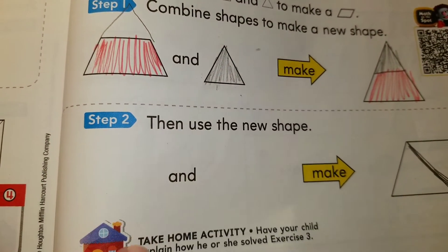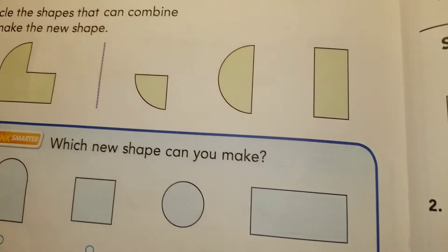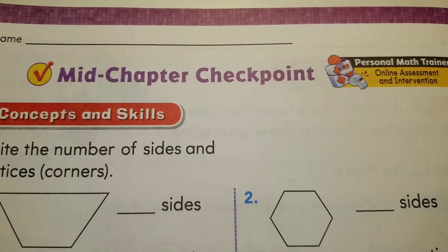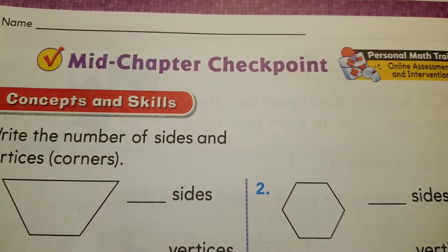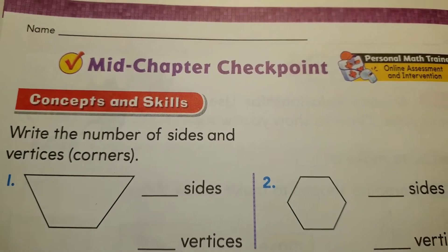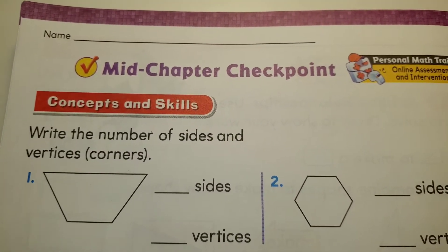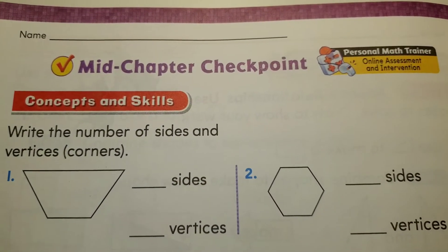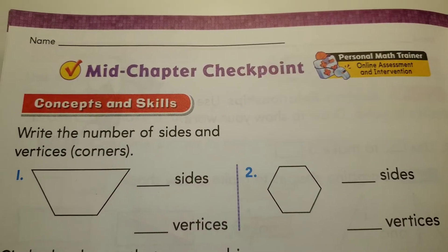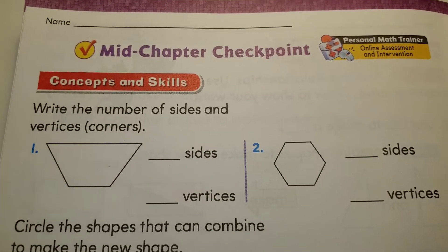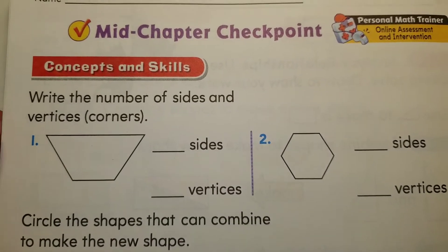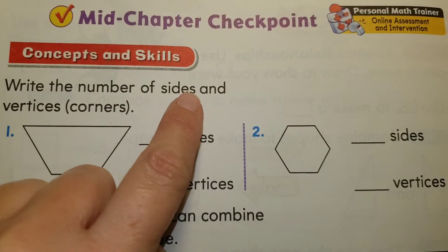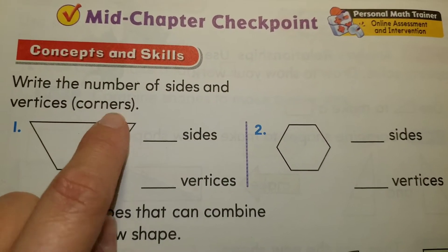Now here we have a little quiz that comes with this lesson — your mid-chapter checkpoint. Write your name and last name at the top of the page. This is your mid-chapter checkpoint, like a little quiz right in the middle to see how well you're understanding this chapter. Number one: it says write the number of sides and vertices. The vertices are also the corners. Let's do the sides first.